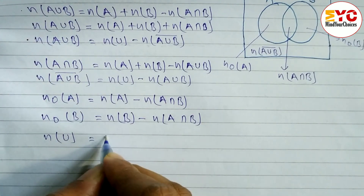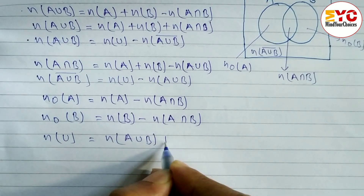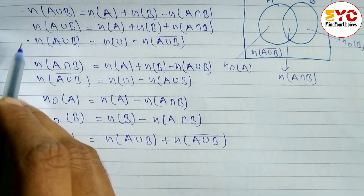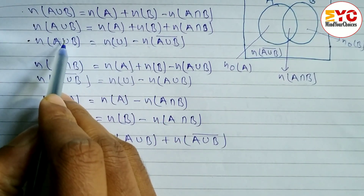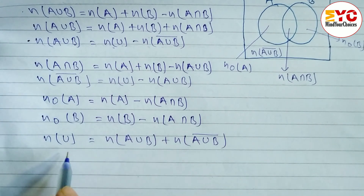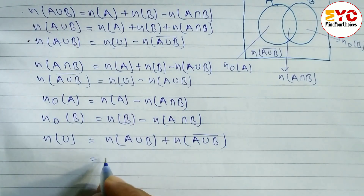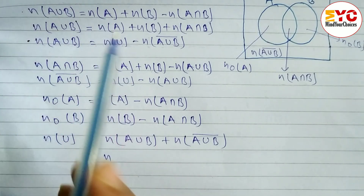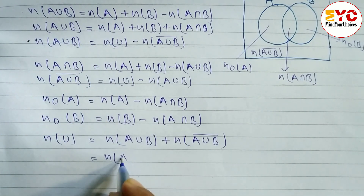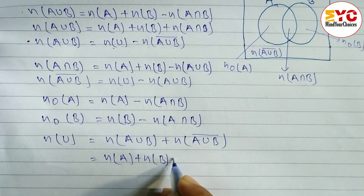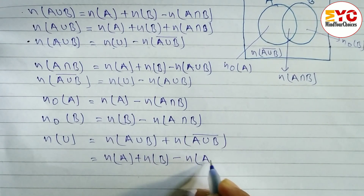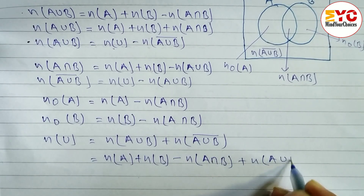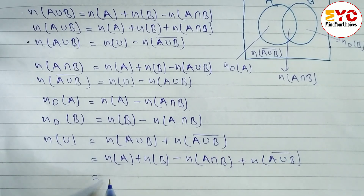To find n(U), we use: n(U) = n(A union B) plus n(A union B) complement. When you add these two, you get n(U). The expanded formula for n(U) is: n(U) = n(A) + n(B) minus n(A intersection B) plus n(A union B) complement.